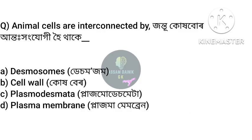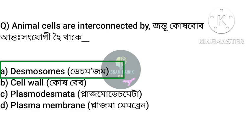First question: Animal cells are interconnected by — Anchar: Desmosom. Desmosomes are the structures by which animal cells are interconnected.